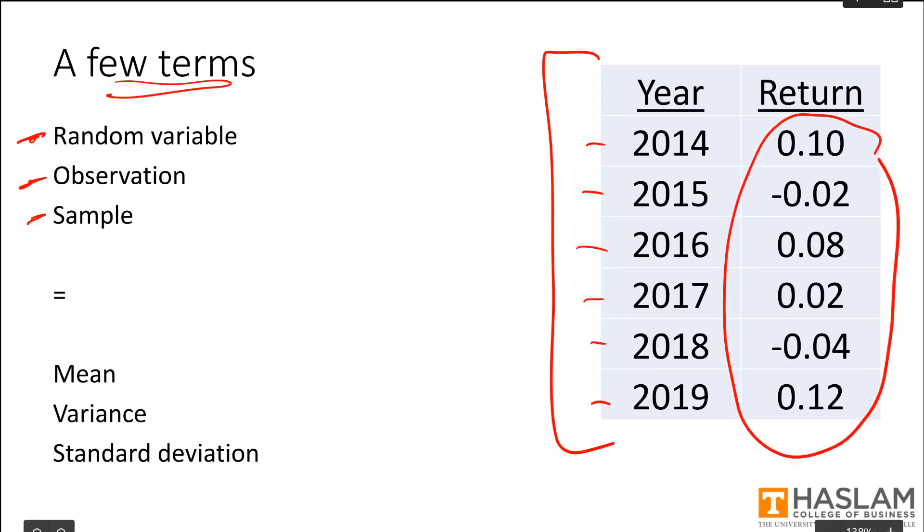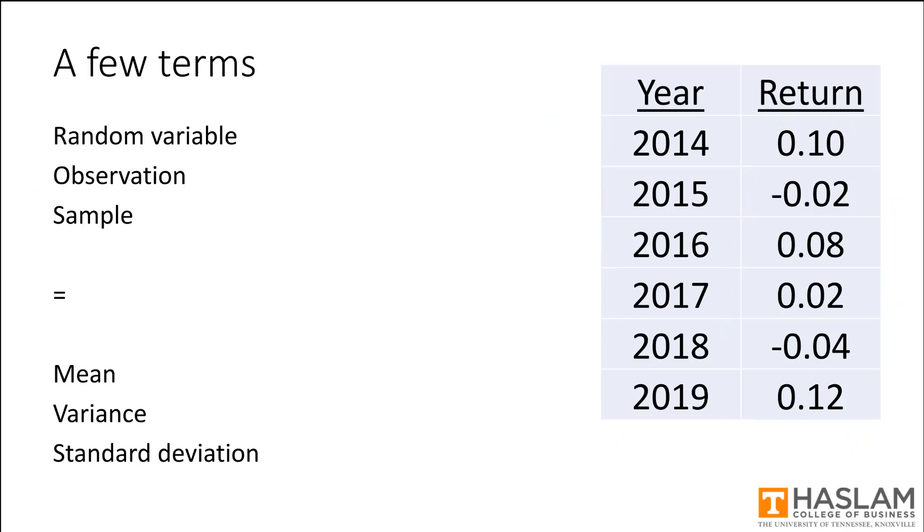Some of our key statistical concepts are here, and these concepts describe the process that is driving the realizations of the random variable. So these concepts—a mean, a variance, and standard deviation—in other words, describe what's happening to generate these different values of a stock's return.